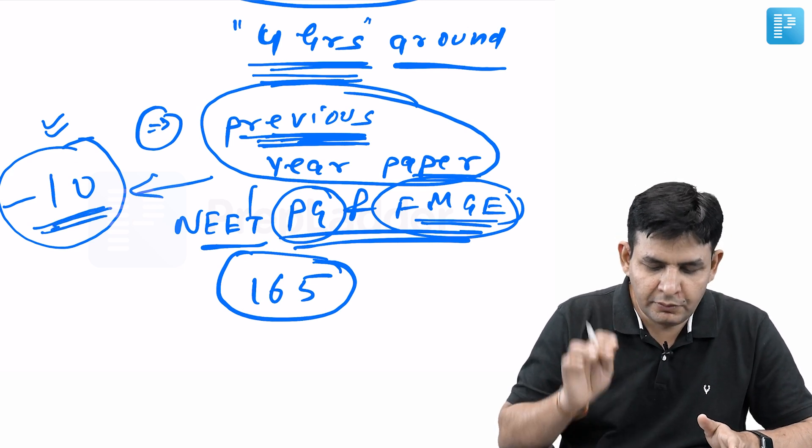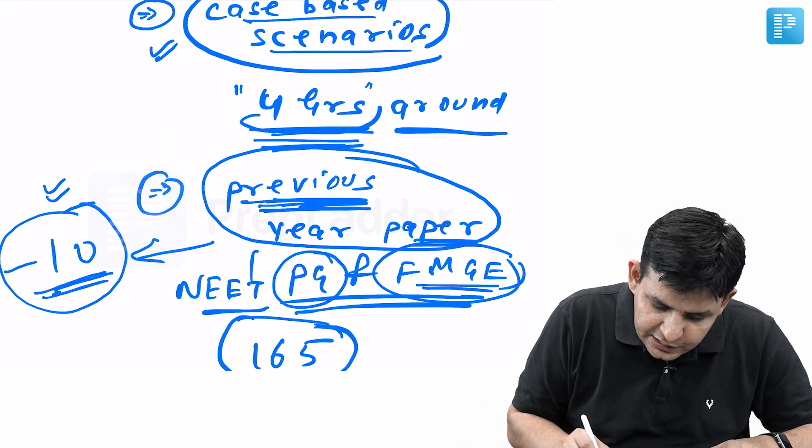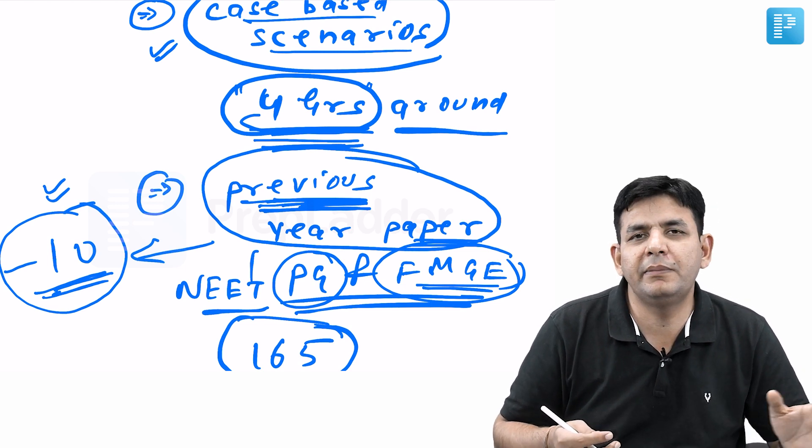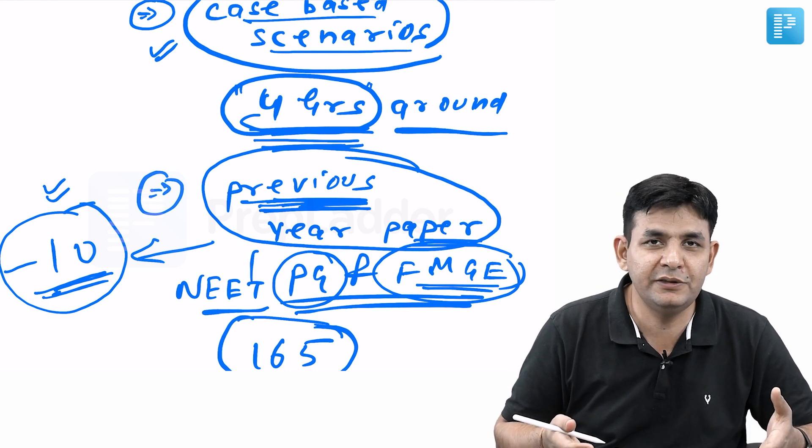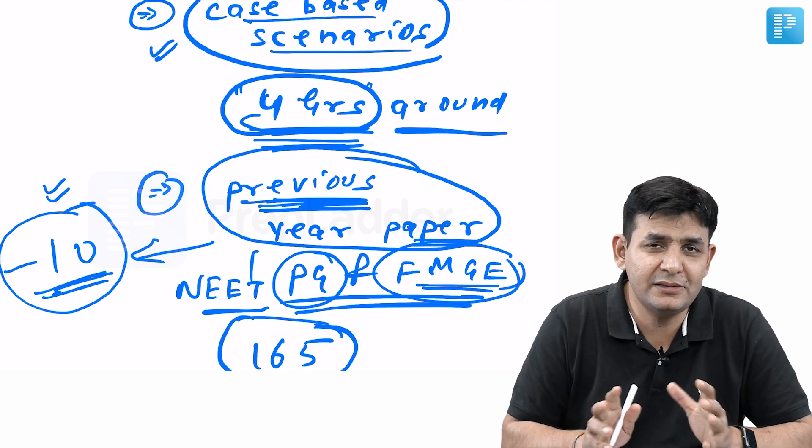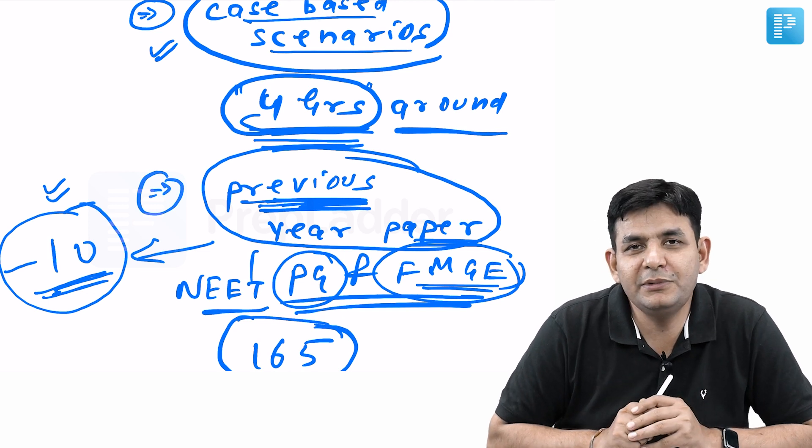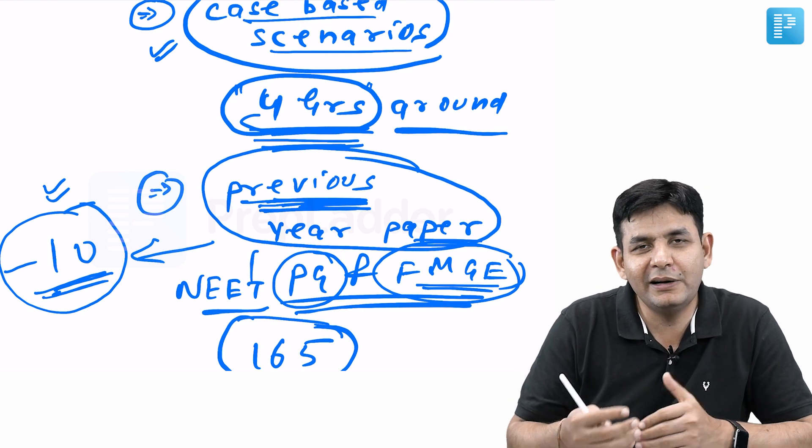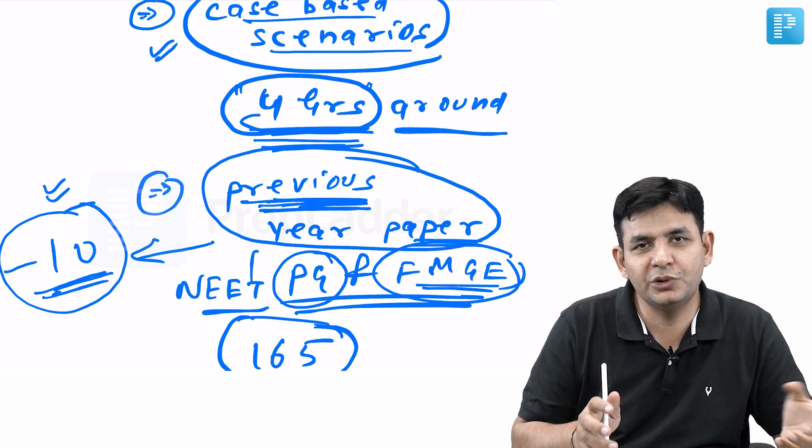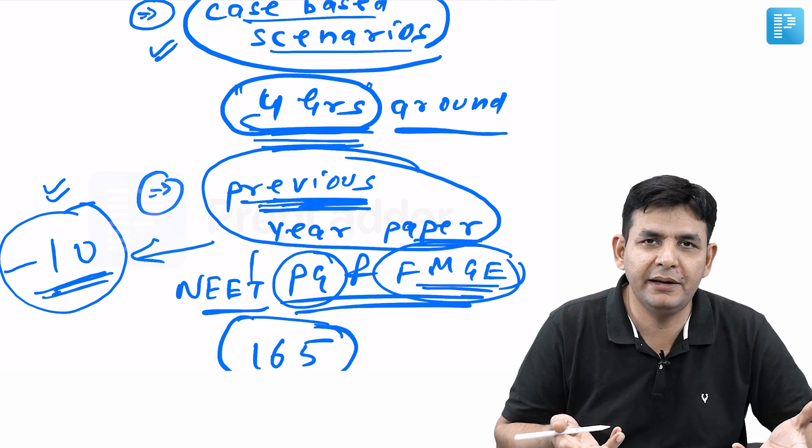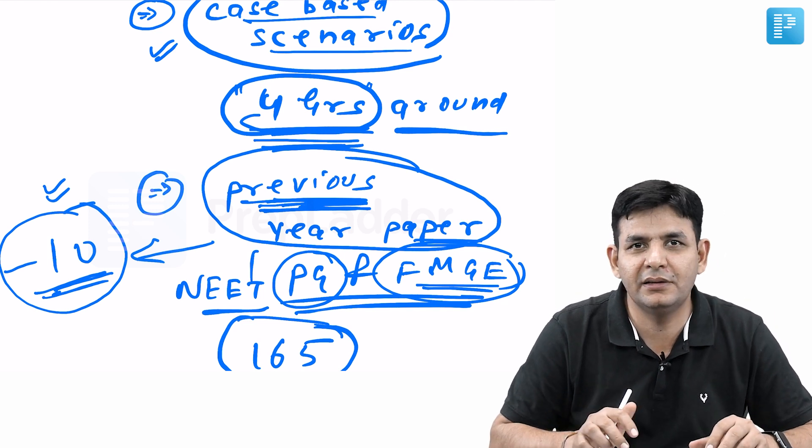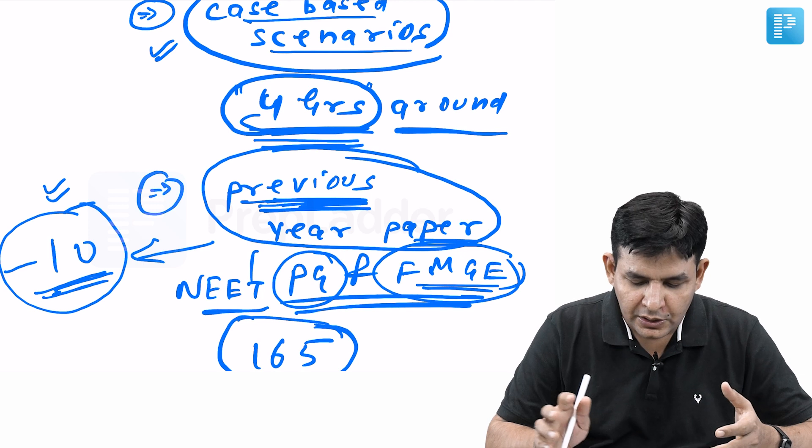For microbiology, if you have not read at all, this case-based scenario should be seen so that will form some foundation. Otherwise, students keep asking which bacteriology we should leave, or mycology, or virology. You can't leave anything, because once I told some students that parasitology doesn't come much in the FMG exam, and that particular time only five to six questions came. You can't say questions will not come from this particular portion. It can come from anywhere.